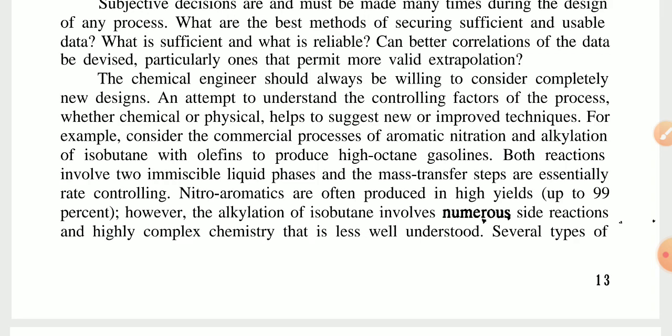For example, consider the chemical processes of aromatic nitration and alkylation of isobutane, which are used to produce high-octane gasoline. Both reactions involve two immiscible liquid phases, and mass transfer between these phases is essentially rate-controlling. Nitro-aromatics are often produced in high yields, up to 99%. However, the alkylation of isobutane involves numerous side reactions and highly complex chemistry that is less well understood.